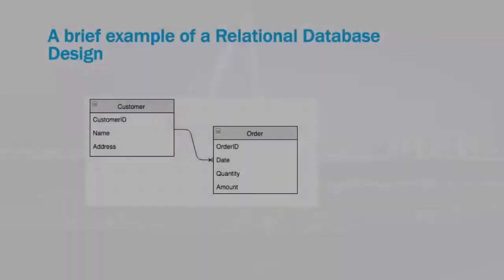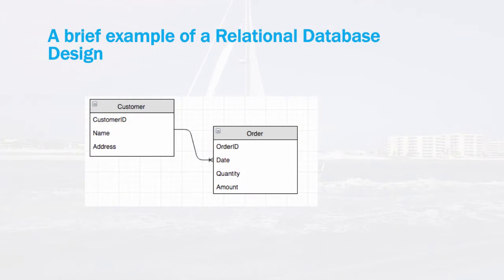If you look at the following example, this is a design of a very simple database with two tables that are related to each other. This diagram is called an entity relationship diagram and is used by database designers to develop and document these types of systems.